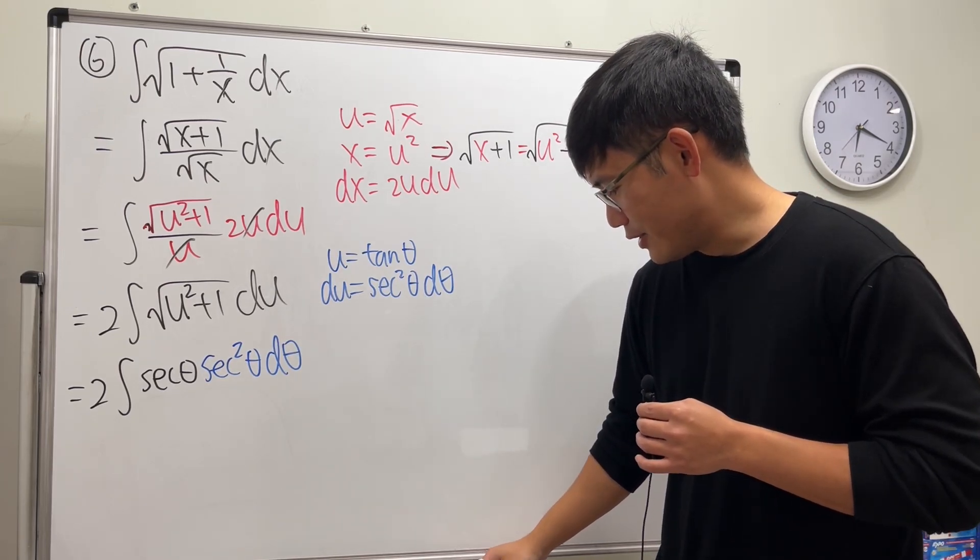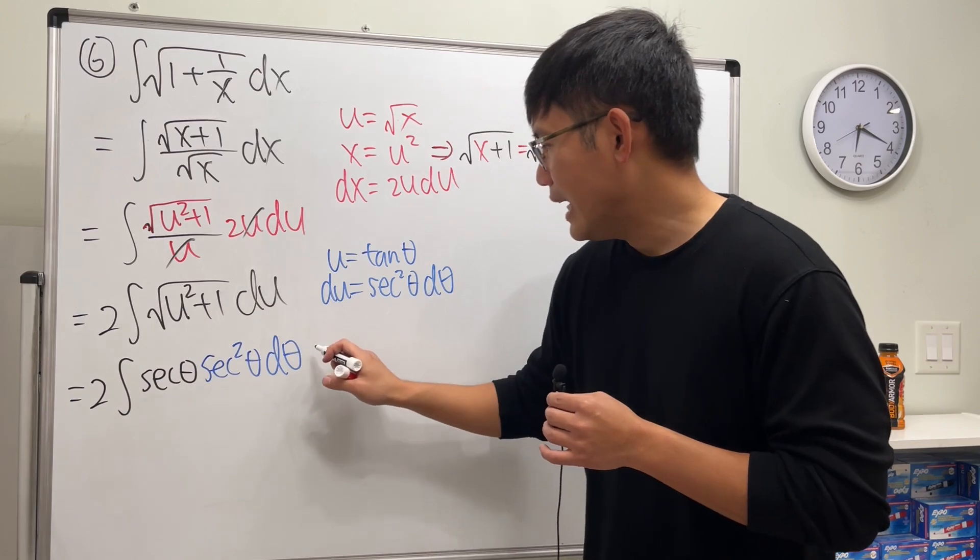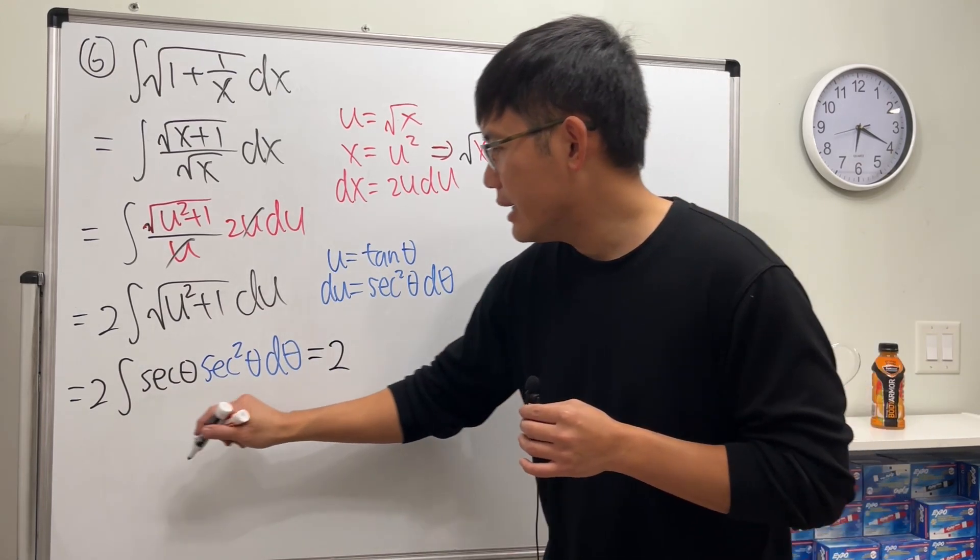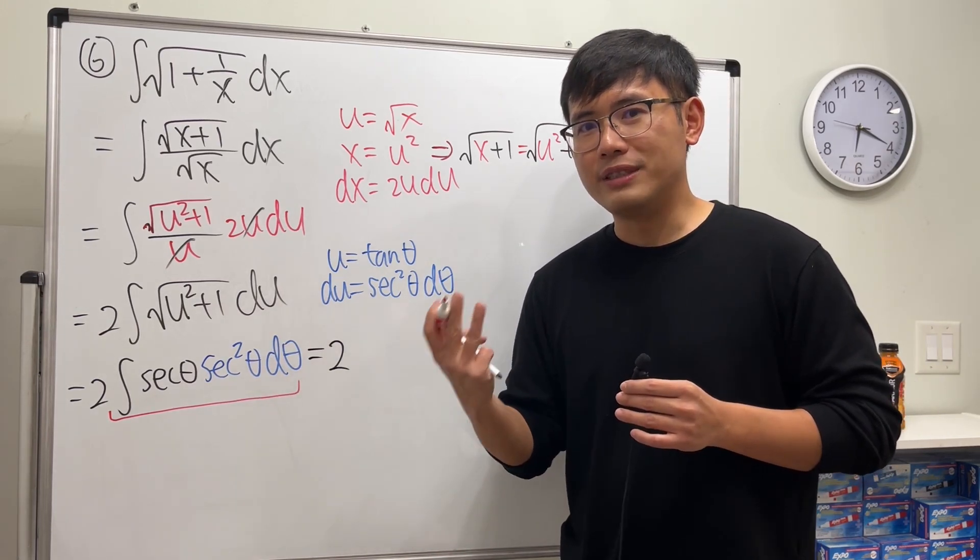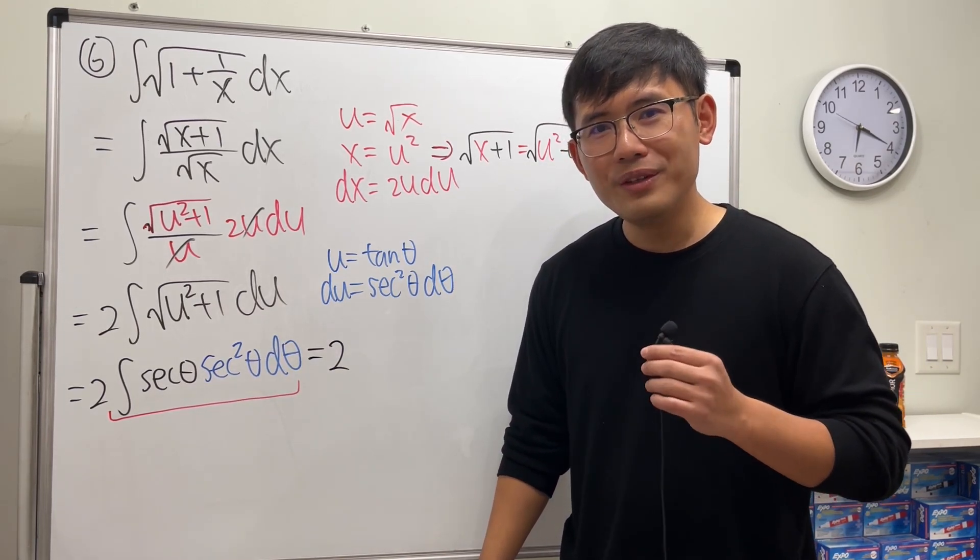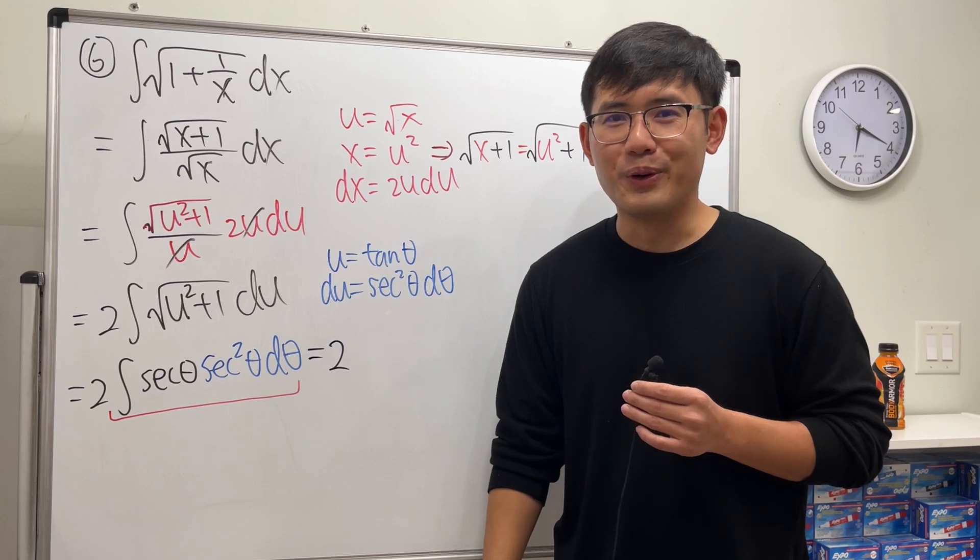Now, ladies and gentlemen, I would like to tell you, right here we have 2. And then the integral of secant theta times secant squared theta is secant to the third power. And guess what? We did that in the previous 200 integral already.